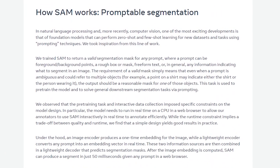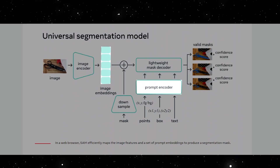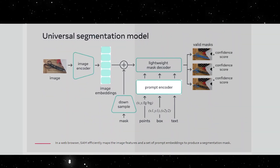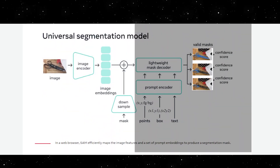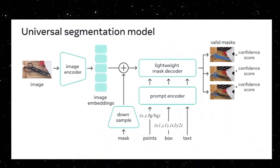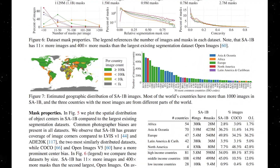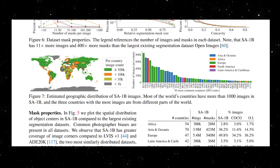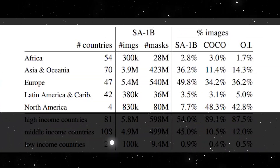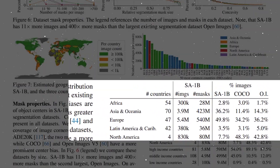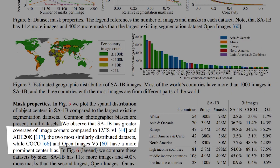The model architecture includes an image encoder that produces a one-time embedding for the image, a lightweight prompt encoder that converts any prompt into an embedding vector in real time, and a lightweight decoder that predicts segmentation masks. After the image embedding is computed, SAM can produce a segment in just 50 milliseconds given any prompt in a web browser. To ensure diversity and equity in the SA-1B dataset, images were sourced from multiple countries across diverse geographic regions and income levels. While certain regions are still underrepresented, SA-1B has a large number of images and better overall representation than previous segmentation datasets.